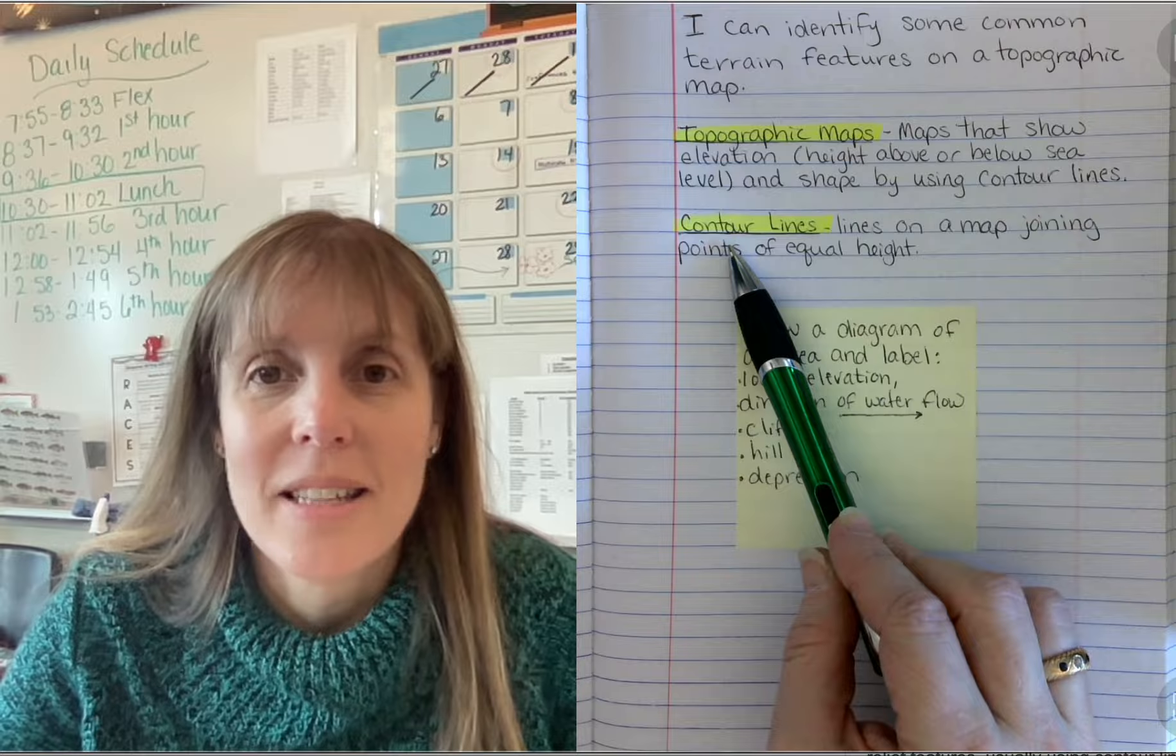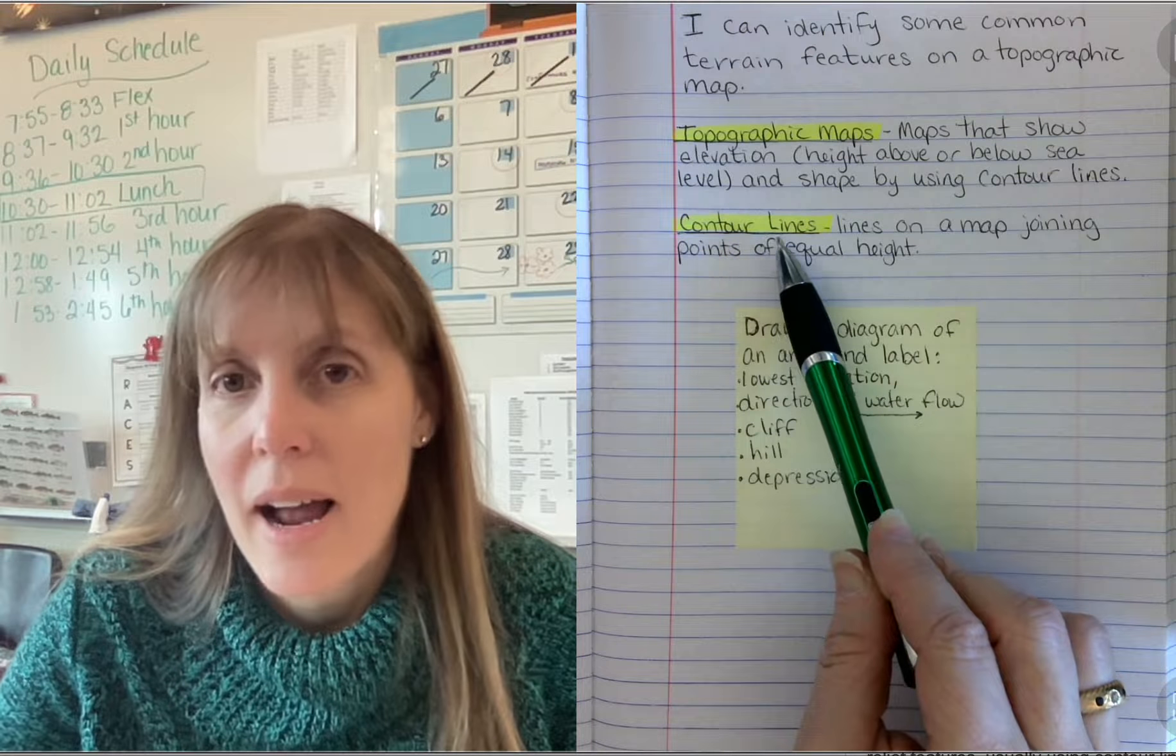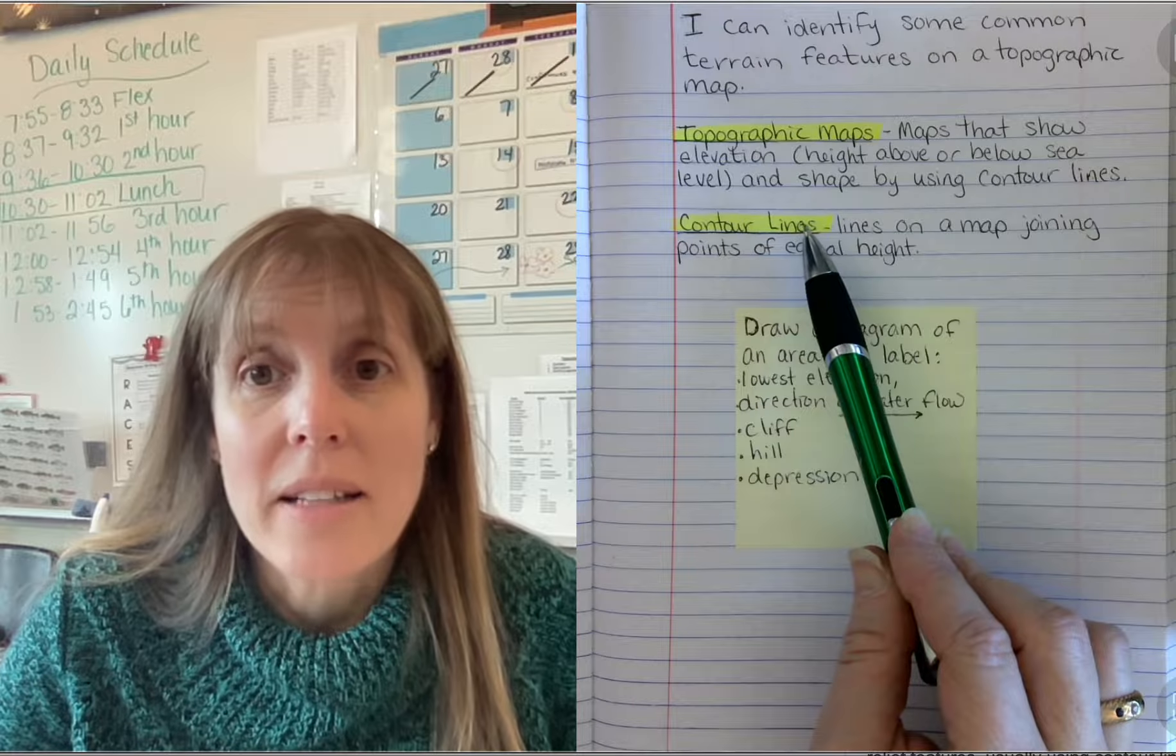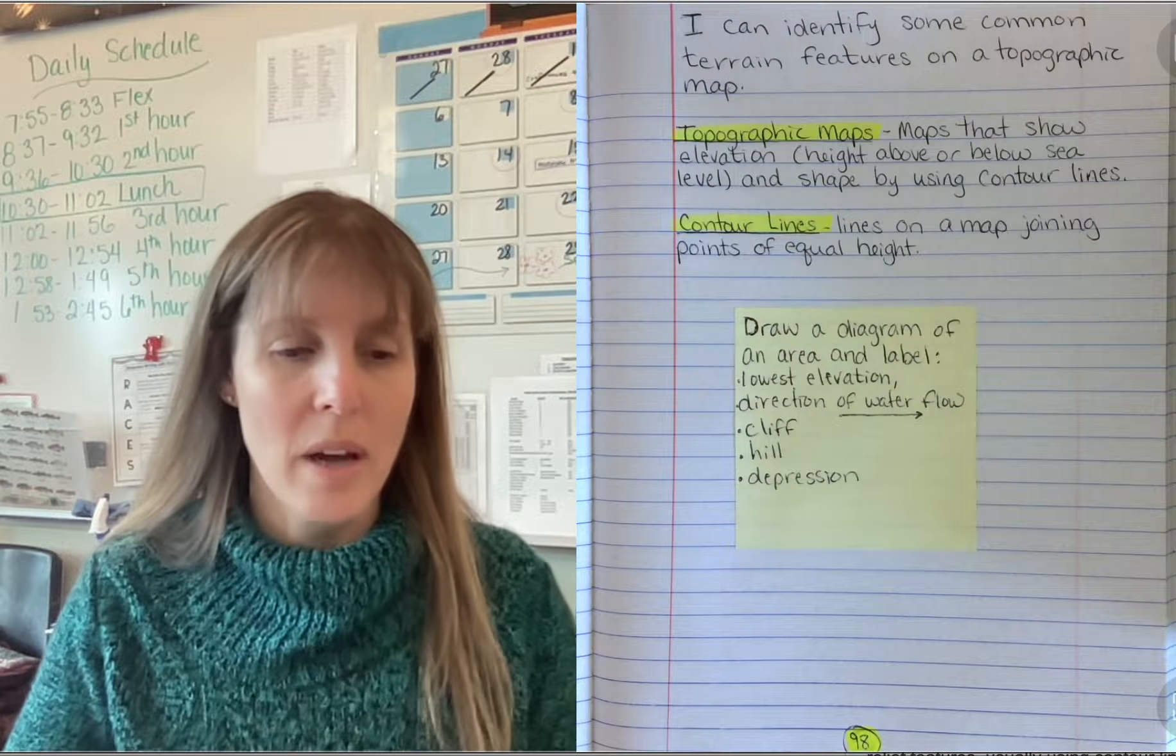Contour lines. Say it with me. Contour lines. Contour lines are lines on a map joining points of equal height.